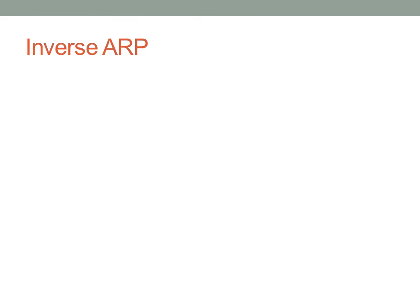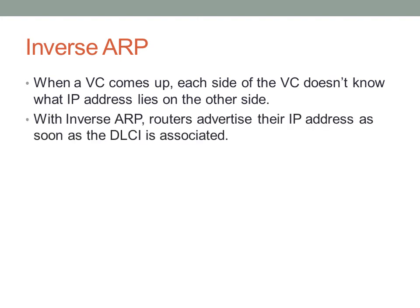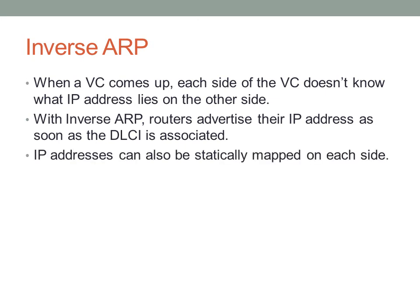Because DLCIs and IP addresses aren't necessarily associated, Frame Relay routers perform Inverse ARP. When a virtual circuit comes up, nobody knows where IP addresses or DLCIs are, and since broadcasts aren't supported, routers can't do a standard broadcast ARP. Instead, routers advertise their IP addresses directly as soon as a DLCI is associated. IP addresses can also be statically mapped on each side, in which case Inverse ARP isn't needed.